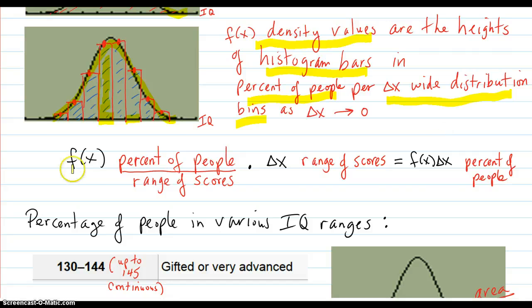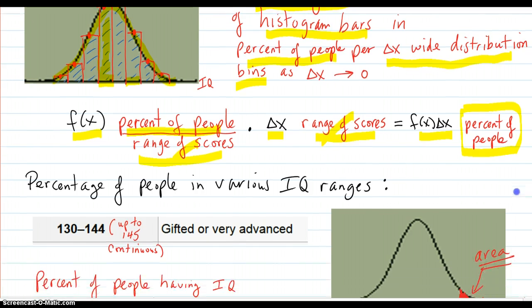So that the height times the range will give you the area inside here. And that's the percentage of people. So in other words, f(x) and the units of that are percent of people per range of scores. And if you multiply that by delta x range of scores, these two cancel out and you get f(x) delta x percent of people. So that's the way it works.